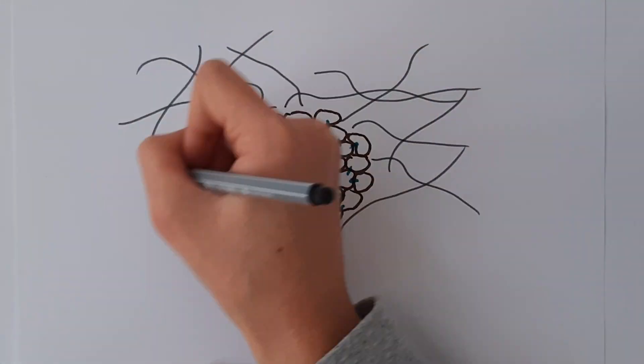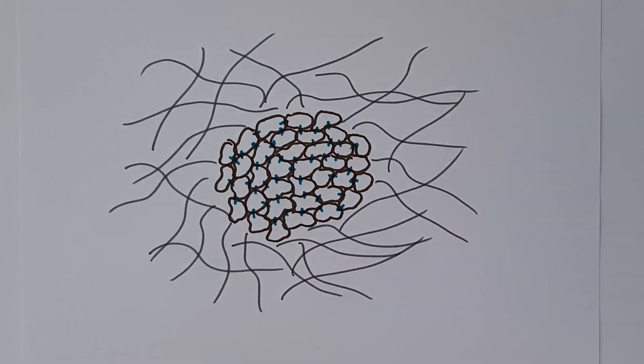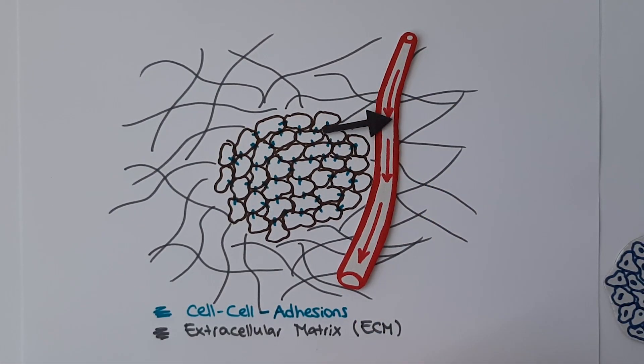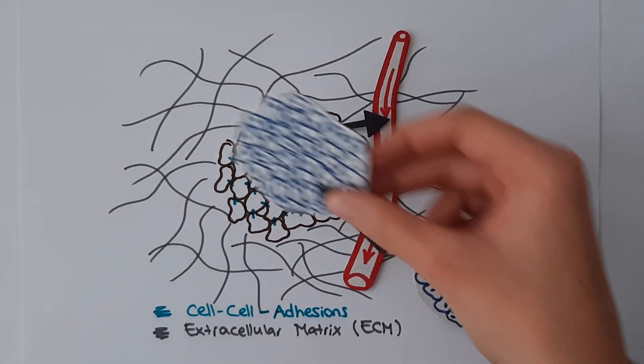The disease becomes especially dangerous if breast cancer cells start to metastasize. That is, when they migrate through the extracellular matrix to blood vessels and other tissues or organs such as the brain, liver, or lung.